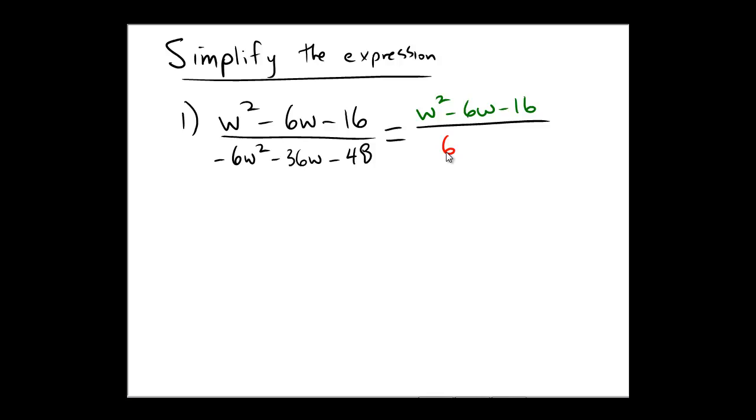In order to make that leading coefficient, that w², be positive, I'm going to pull out a negative 6. This will give me a big advantage in a few seconds. So if we pull out negative 6, that w² is going to be left alone at the beginning. Negative 6 out of negative 36 would be plus 6w, and negative 6 out of negative 48 would be positive 8.